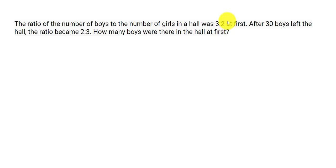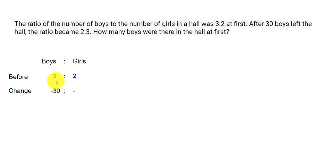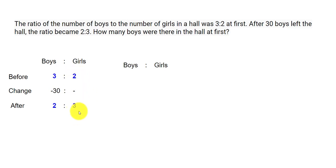For the algebraic method, we write down the ratio of boys to girls. At first the ratio was 3 to 2. Then 30 boys left the hall, so we subtract 30 for boys; for girls there is no change. The after condition is 2 to 3. This confirms there is no change in the number of girls. Instead of 3 to 2 we write 3x to 2x, where x is some multiplier — for example if x equals 5, then there would be 15 boys initially.